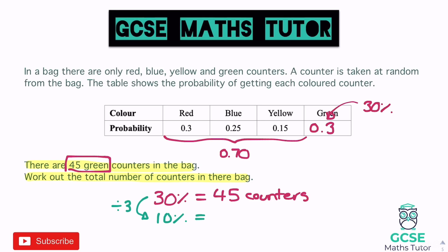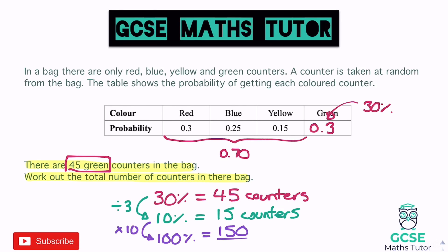Dividing by 3: 45 ÷ 3 = 15, so 10% equals 15 counters. From 10% back to 100% we just multiply by 10, so 100% equals 150 counters. That's our final answer: 150 counters total in the bag.